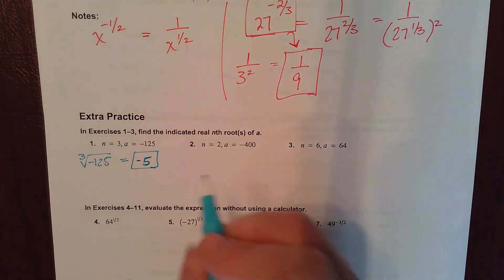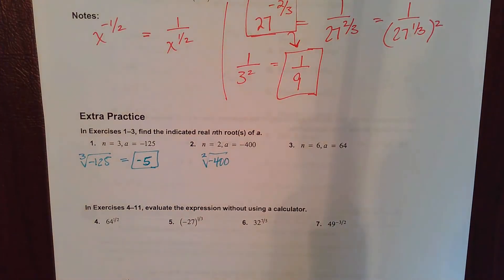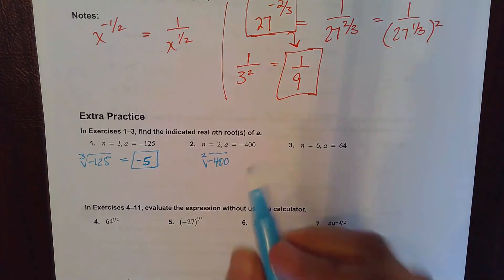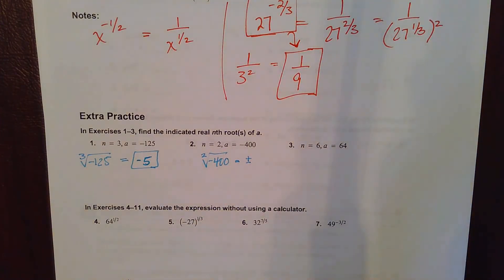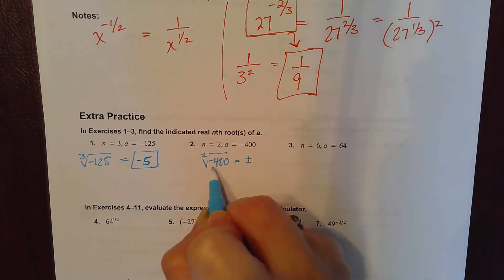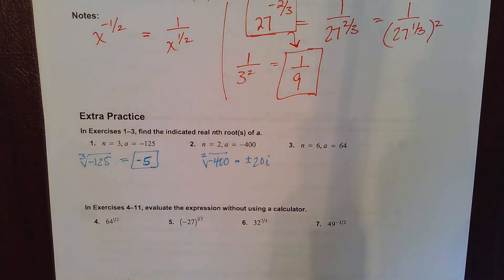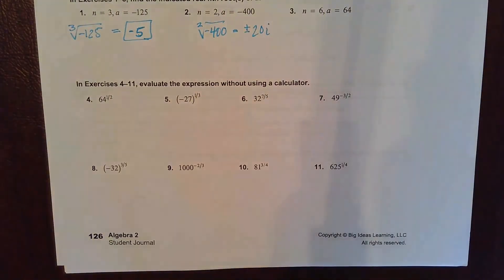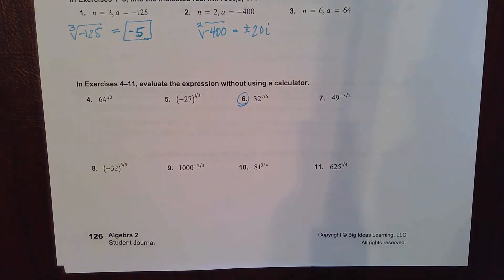Next example: the square root of negative 400. In this case it's not going to be real, so there are no real nth roots because you can't take an even root of a negative number. We do know how to evaluate imaginary solutions — I could write plus or minus the square root of 400, which is 20, times i for the square root of negative one. But since the problem only asks for real roots, the answer is that no real nth root exists. I'll save number three for you to practice in class.